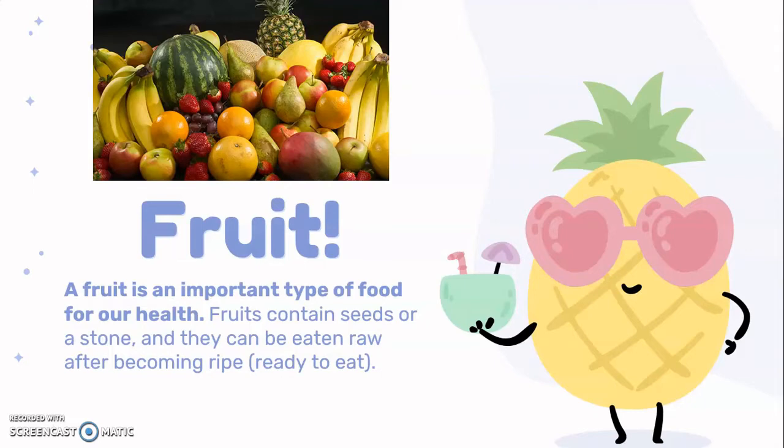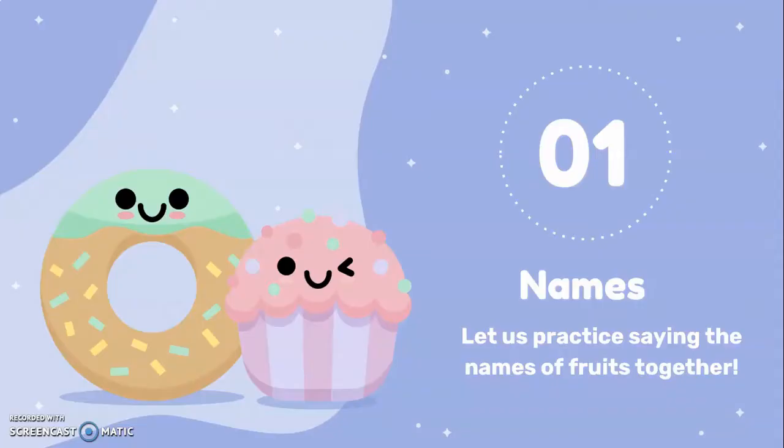Let's warm up first. What is a fruit? A fruit is an important type of food which is very much important for our health. Fruits contain seeds or stone and they can be eaten raw after becoming ripe or ready to be eaten.